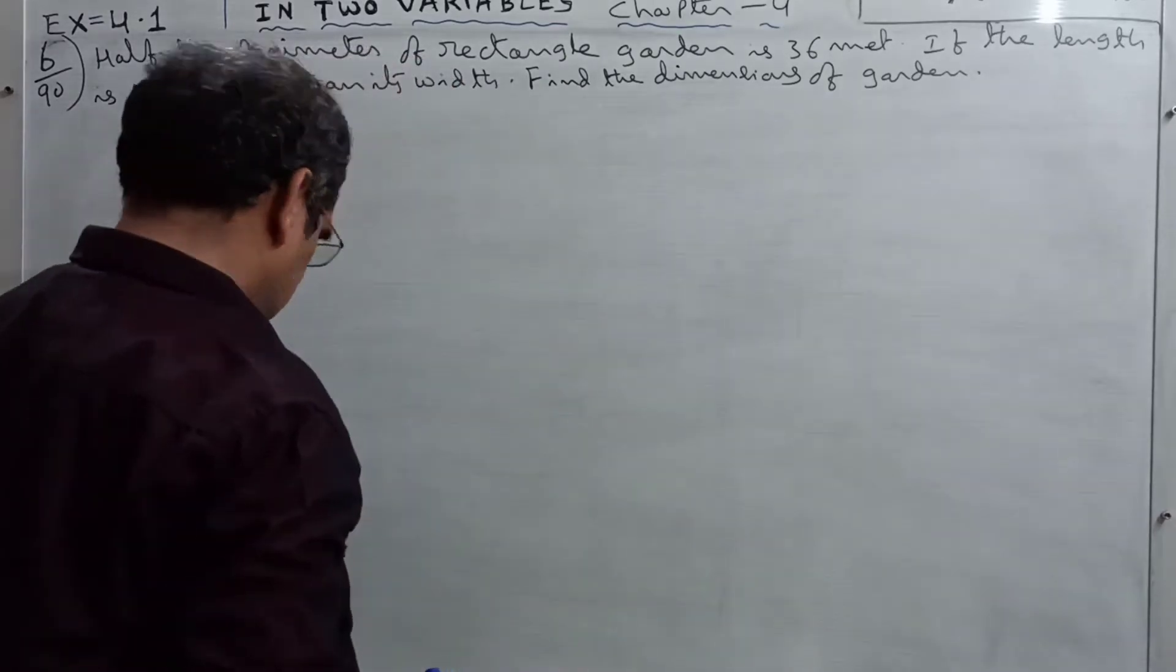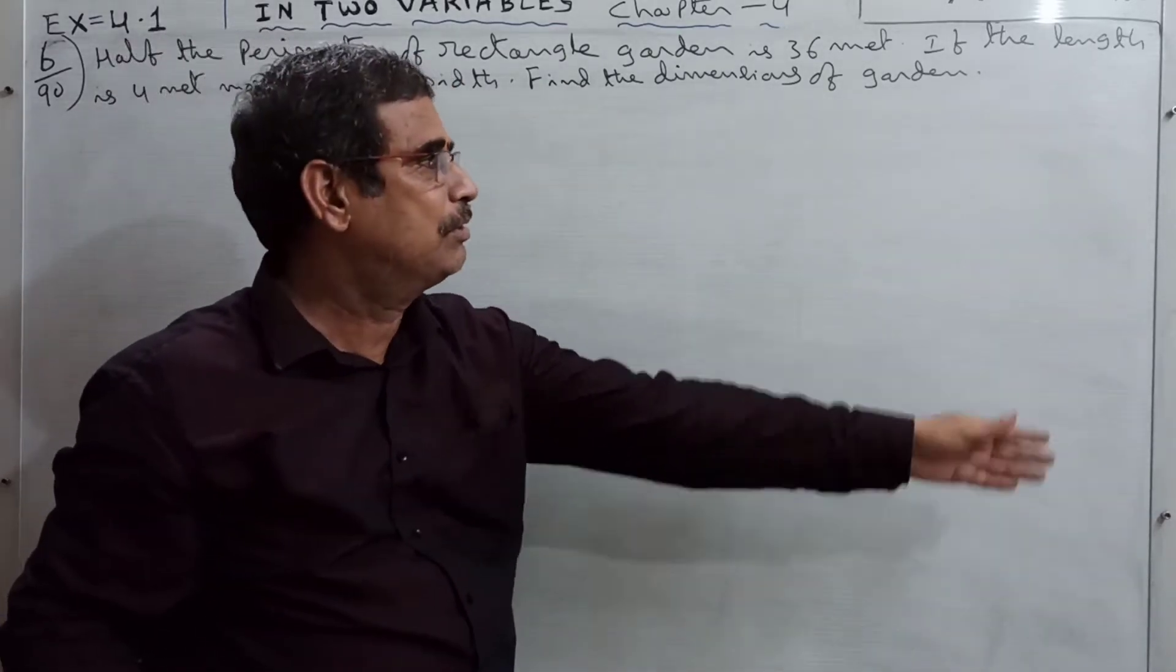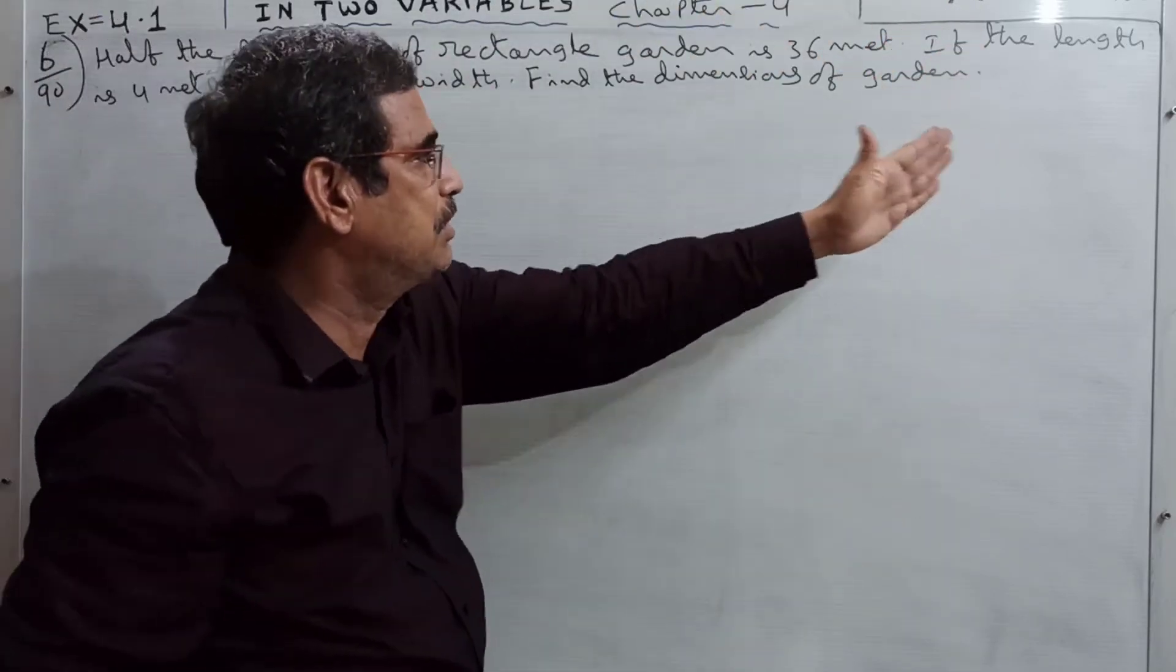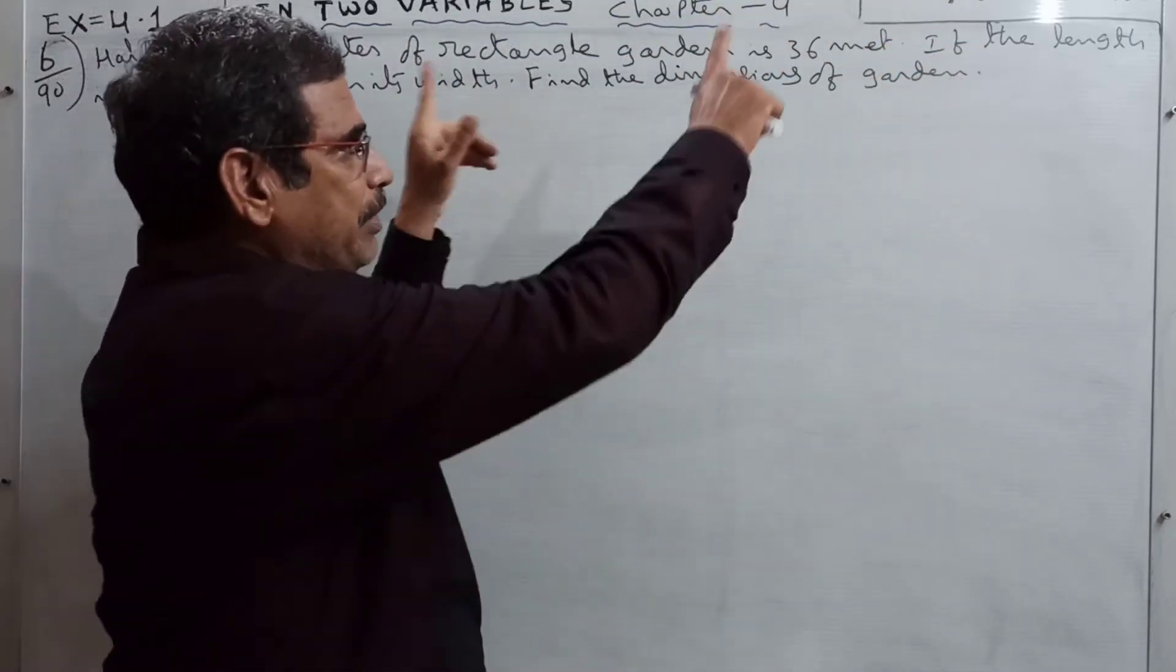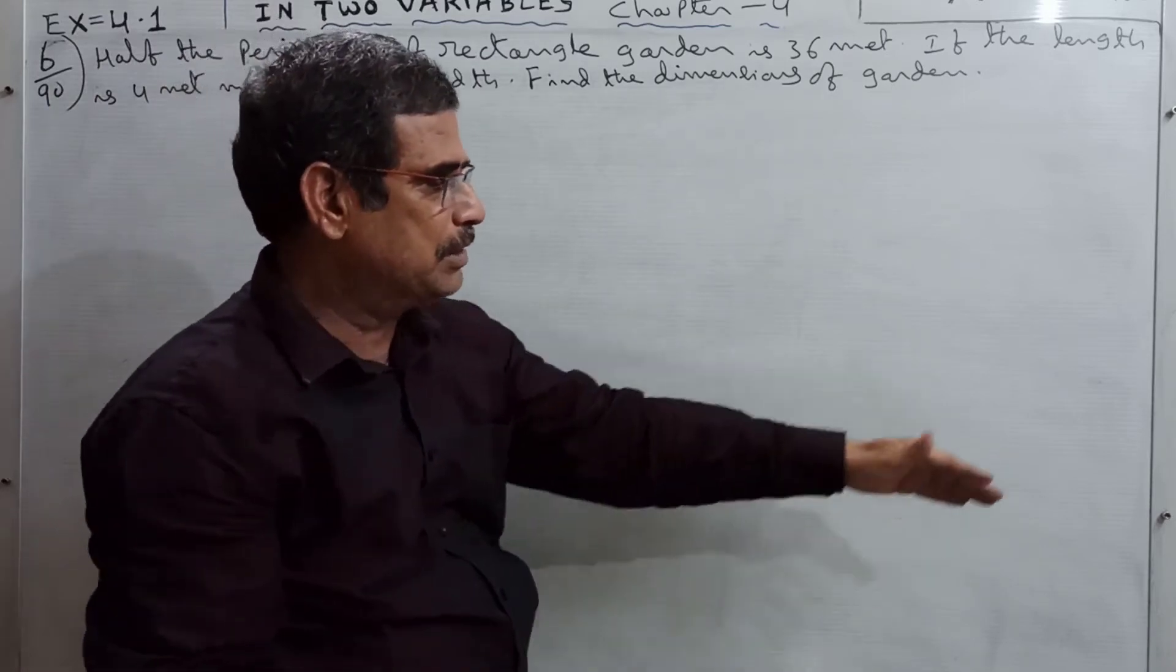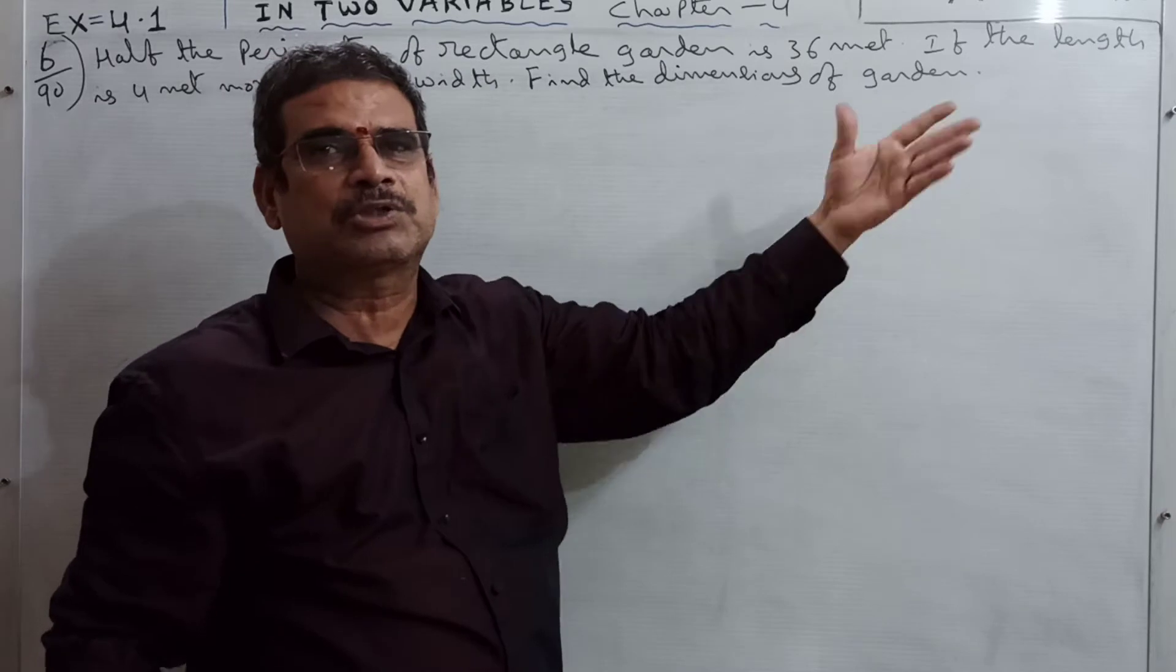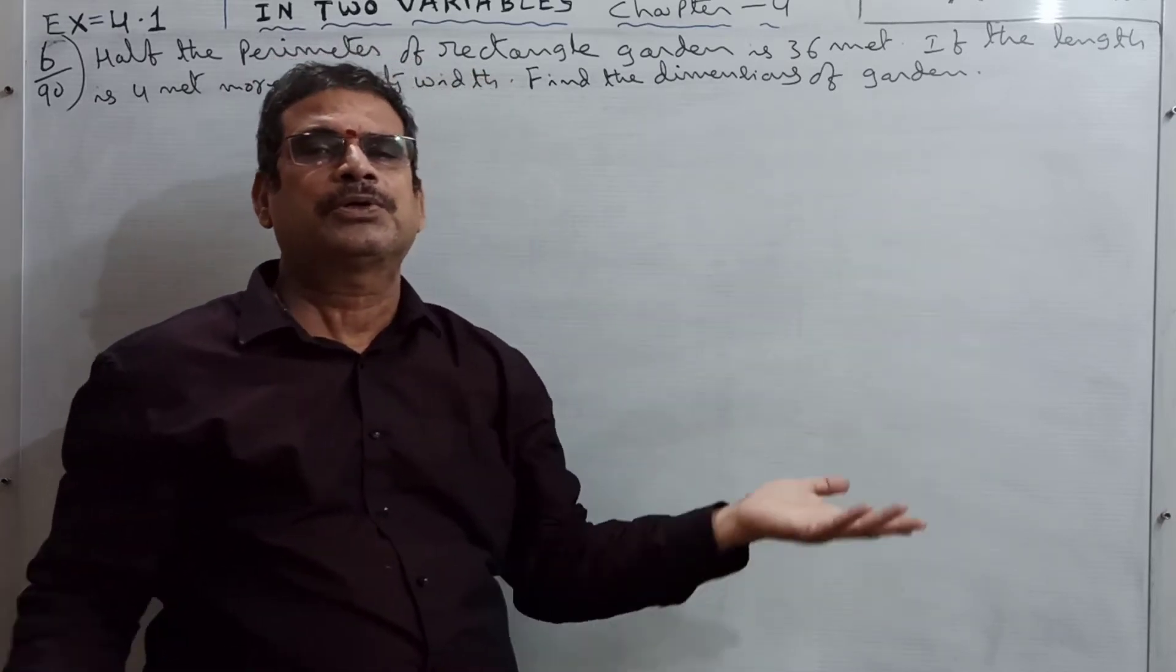If we call this 10 and this 6, perimeter is 10 plus 10 is 20, 6 plus 6 is 12, 20 plus 12 is 32. We call it 32 meters.